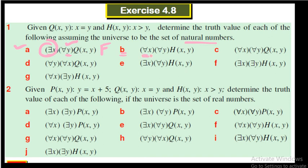Part (b) asks 'for all x, for all y, h(x,y)': does every natural number x always exceed every natural number y? No — if we take numbers randomly, the first might be bigger or smaller than the second. Similarly, part (c) asks whether every pair of natural numbers x and y are always equal, which is also false since they are chosen randomly. Better to practice with these exercises.